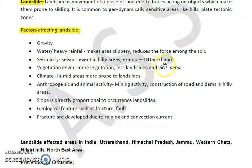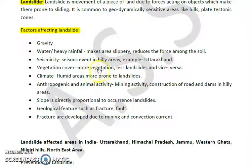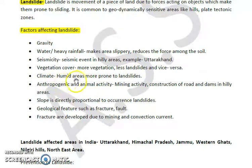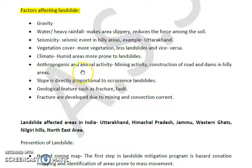The next factor is seismicity - seismic events in hilly areas. For example, in Uttarakhand many such incidents have occurred. Then there is vegetation cover - more vegetation means less landslide, and vice versa, because vegetation holds soil particles intact. Climate is also a factor; humid areas are more prone to landslides because the soil becomes loose by absorbing a lot of moisture.